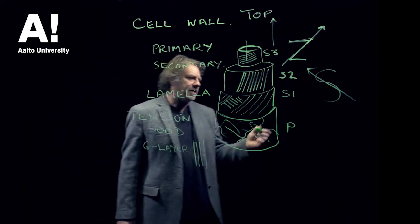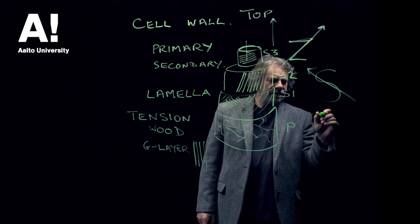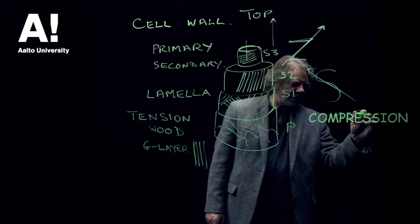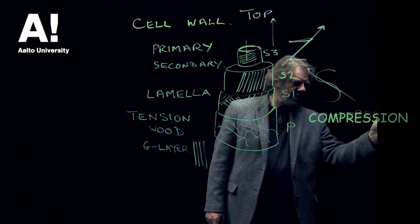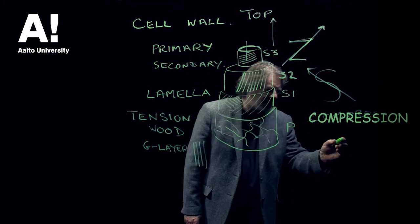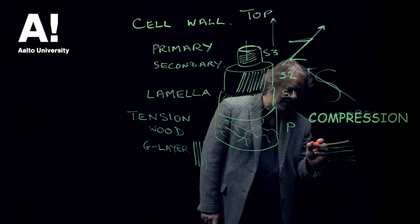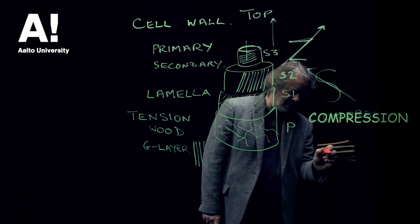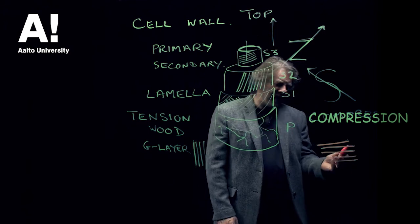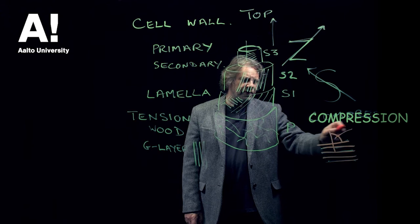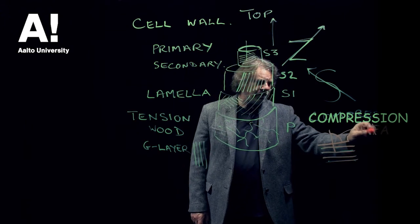In compression wood, which you get in softwoods, that S2 winding layer has a much larger microfibrillar angle there, not exactly horizontal, but much larger. That's called the microfibrillar angle.